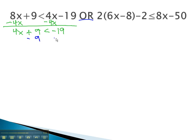Subtracting 9 from both sides gives us 4x is less than negative 28. Finally, dividing both sides by 4 gives us x is less than negative 7.